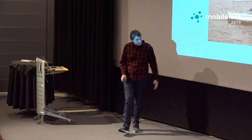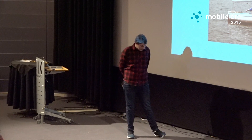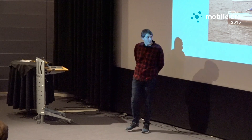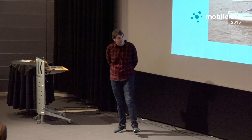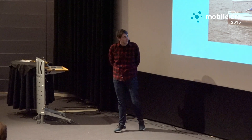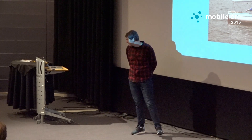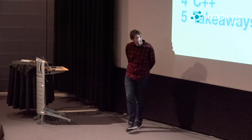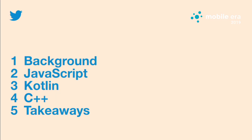At Twitter, my team looked at replacing our sailboat with a powerboat, but we realized the powerboat is going to have way more problems than our trusty old sailboat. So I'm going to go over some background and some issues with our sailboat that we're facing, then talk a little bit about JavaScript, some Kotlin and C++, and then some takeaways.